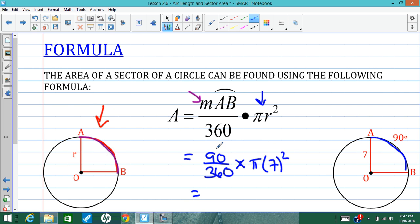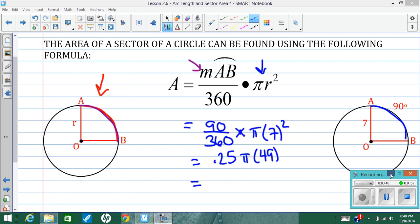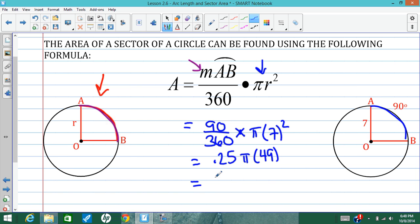90 over 360. That's a fourth of the circle. So it's 0.25 times pi times 49. And then we can do 0.25 times 49. I'm going to make a calculation. That turns out to be 12.25. And I'm going to leave this in terms of pi, so I won't multiply by pi. I'll just put the pi next to it. So the area of this sector here in blue is 12.25 pi.